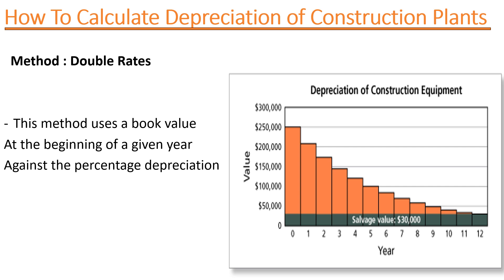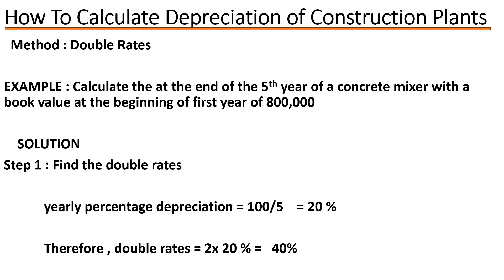The double rates method uses a book value at the beginning of a year against a percentage depreciation. If you look at this chart, this is how depreciation goes — when you bought the plant it goes down after one year, then again after the second year, and keeps going down. At the end of the lifespan of the plant, what you have is the salvage value — the amount of value at which you can now sell the plant after its lifespan has expired.